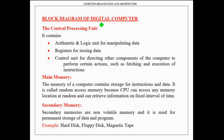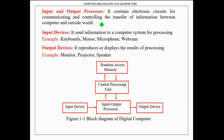Let us now discuss about the block diagram of a digital computer. This diagram illustrates the block diagram of a digital computer. The digital computer consists of major components such as random access memory, central processing unit, input/output processor, input devices, and output devices.